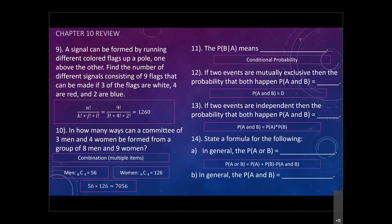The general formula for P(A and B) is the probability of A times the probability of B given A already occurred. If the events are independent, it simplifies because the first does not affect the second. I'll double check whether the final exam provides a formula sheet and let you know. For now, study as if you have to remember all the formulas yourself.